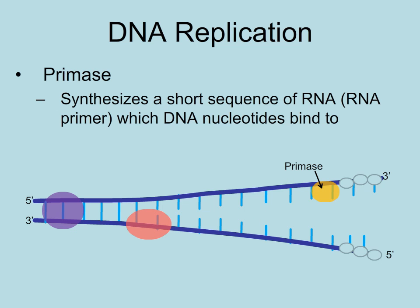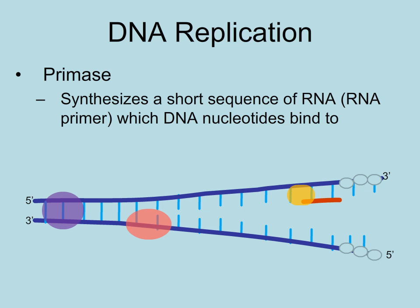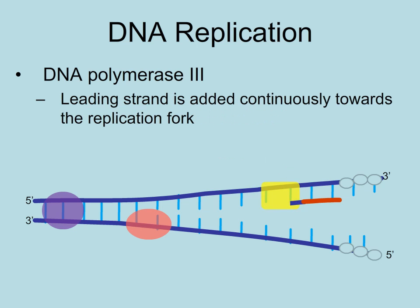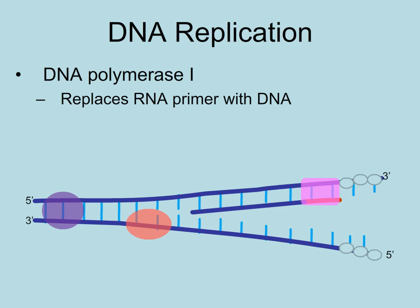The enzyme primase initially adds a short sequence of RNA nucleotides as a primer. This must occur because the enzyme that adds DNA nucleotides, DNA polymerase III, can only add a nucleotide to an existing nucleotide. The primer will be replaced with DNA nucleotides later. DNA polymerase III adds DNA nucleotides in a 5' to 3' direction to create the leading strand, which is continuously added toward the replication fork. DNA polymerase I will then replace the primer with DNA nucleotides.